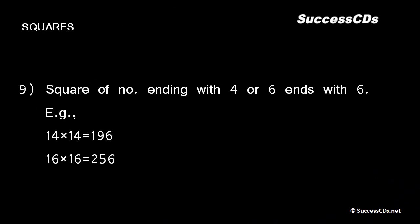Next, the square of a number ending with 4 or 6 ends with digit 6. Let's have a look: 14² = 196 and 16² = 256.